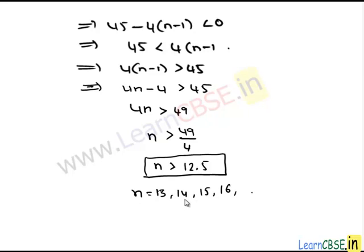According to the problem, we have to find the first negative term. The first negative term corresponds to the first value of n, which is 13. So the 13th term is the first negative term. This completes our solution. Thank you.